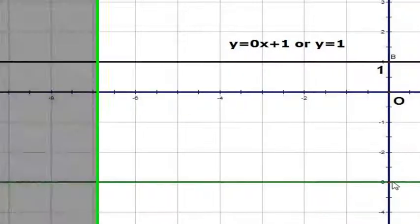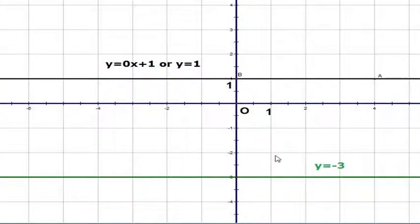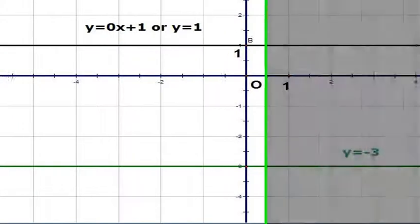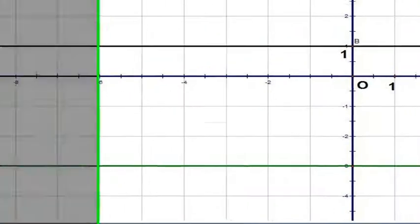Here is a horizontal line that passes through (0, -3). The equation of this line is y equals -3.